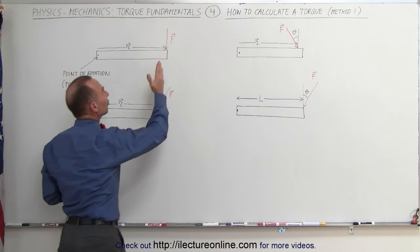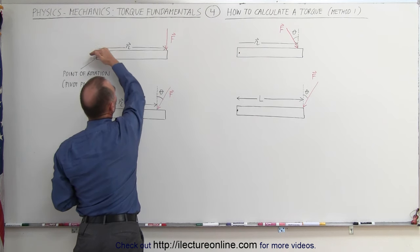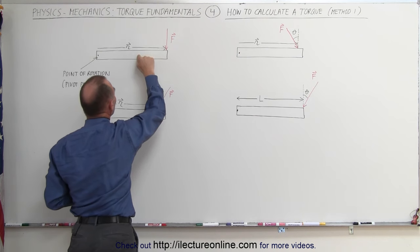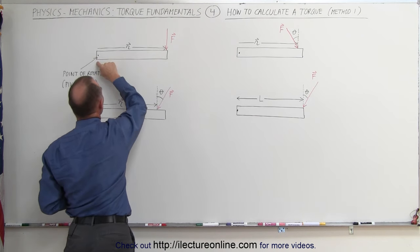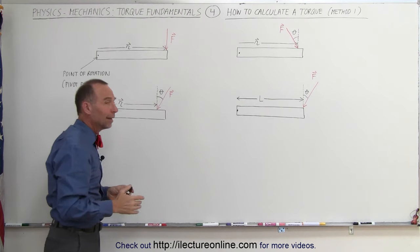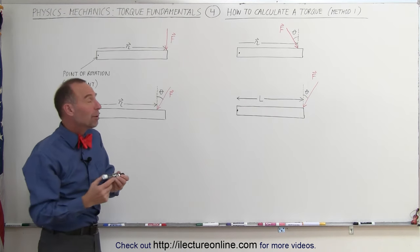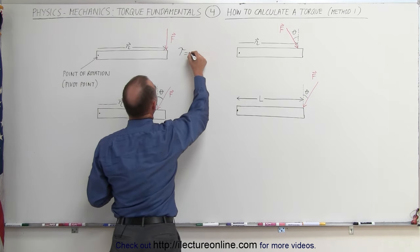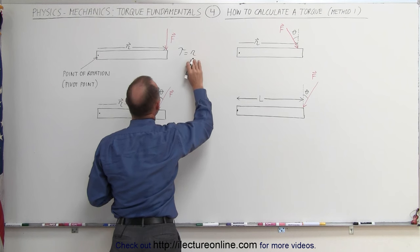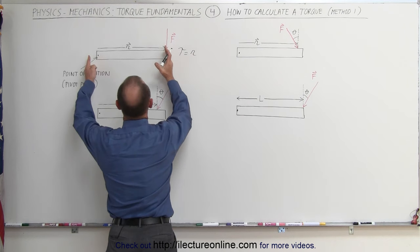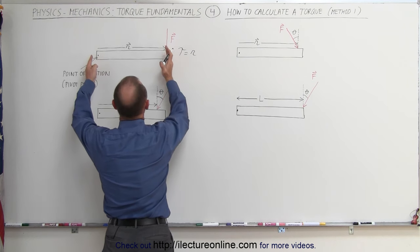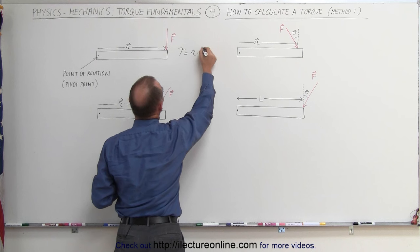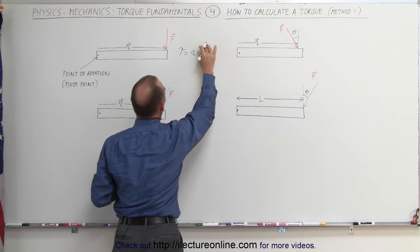To calculate the magnitude of the torque in this case, since the force is perpendicular to what we call the position vector from the point of rotation to where the force is acting, the torque can simply be calculated by multiplying the magnitude of the position vector — which in this case would be the length of this object — times the magnitude of the force.